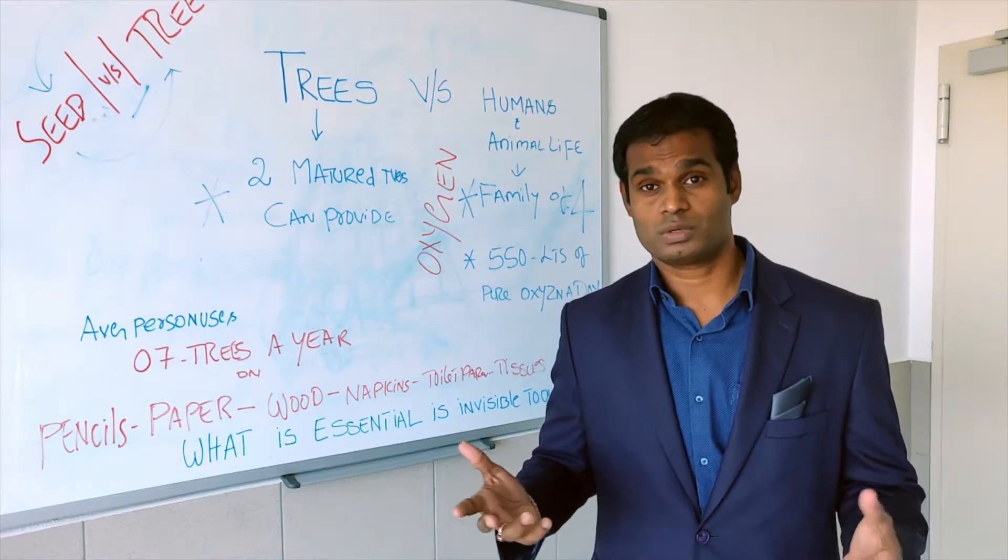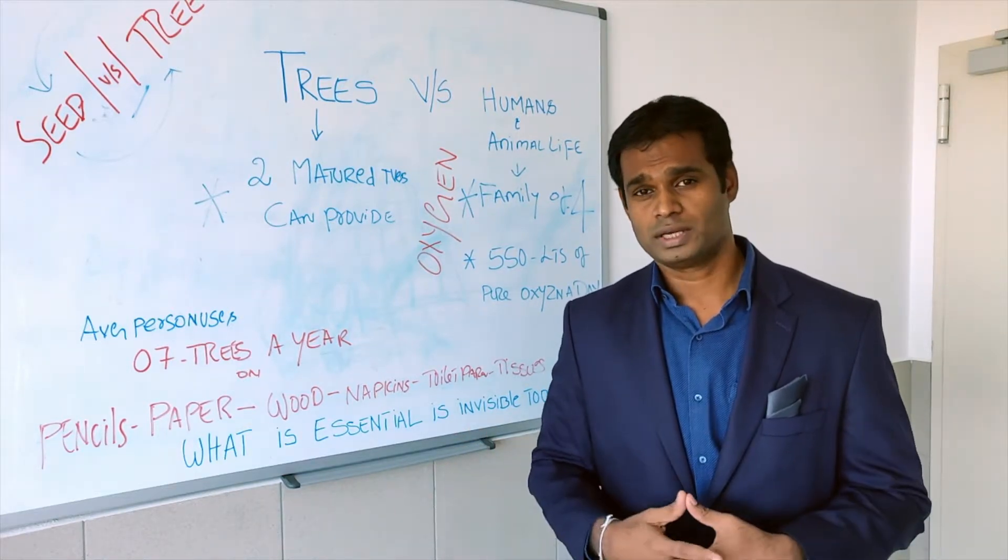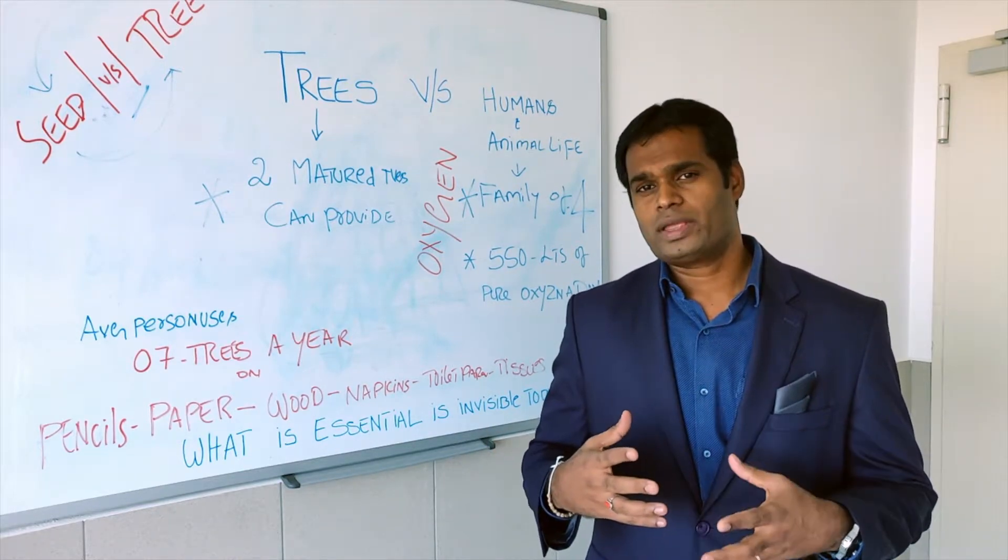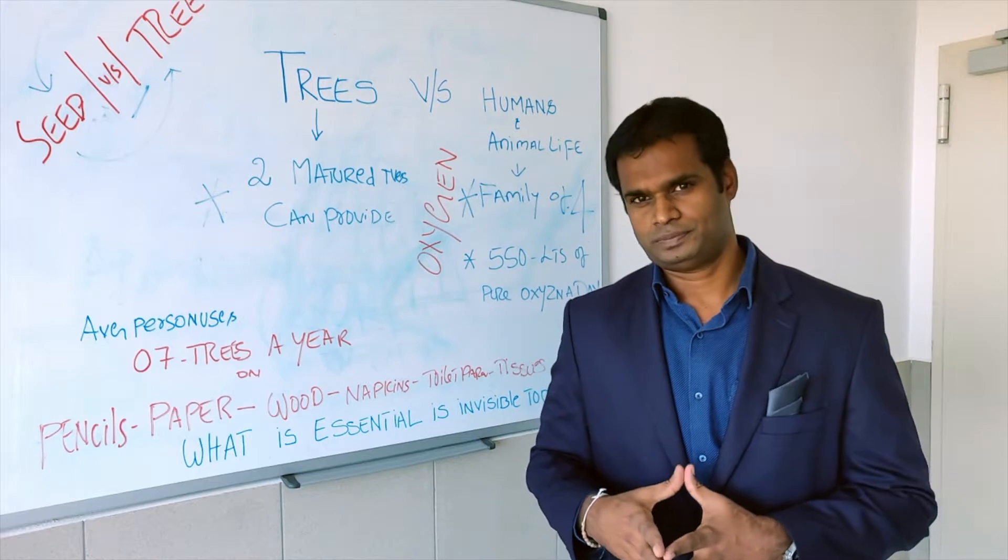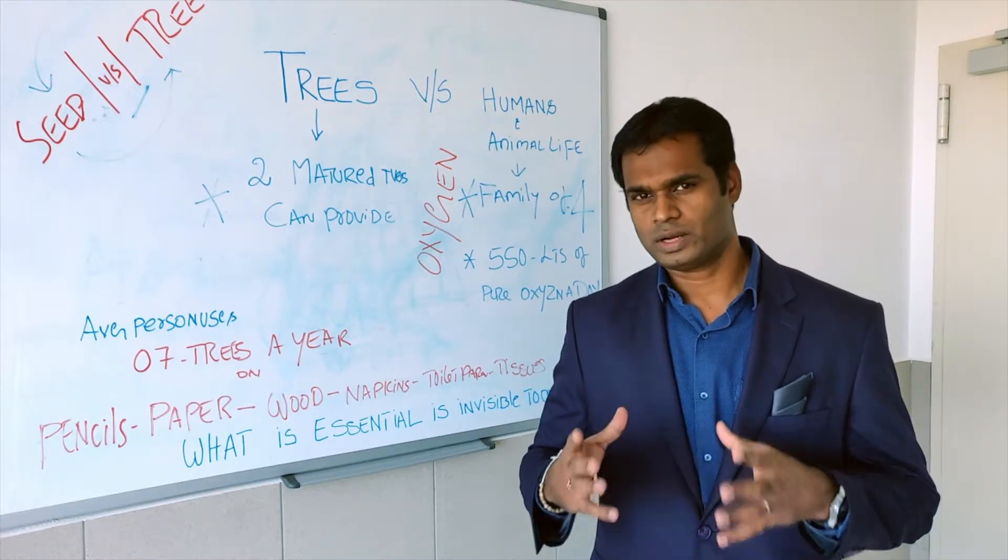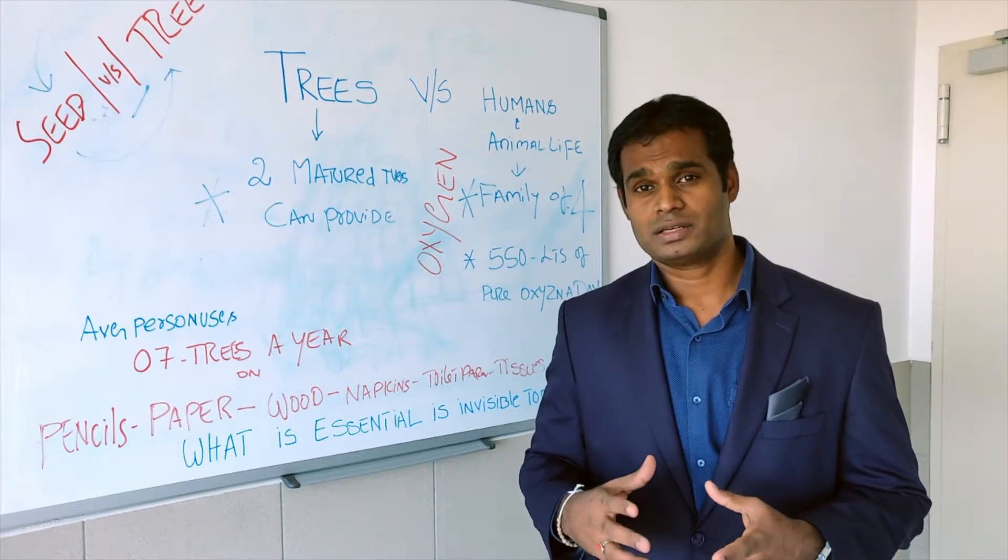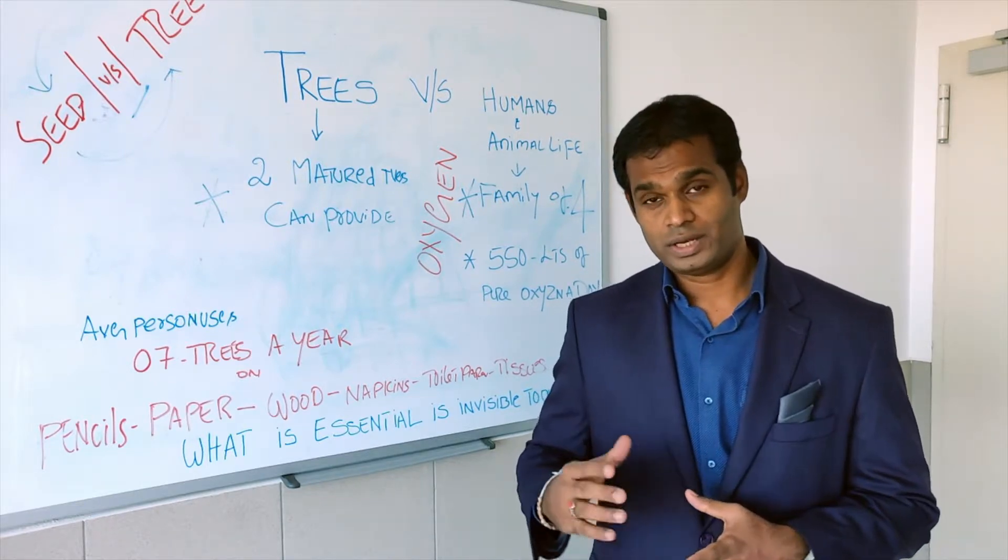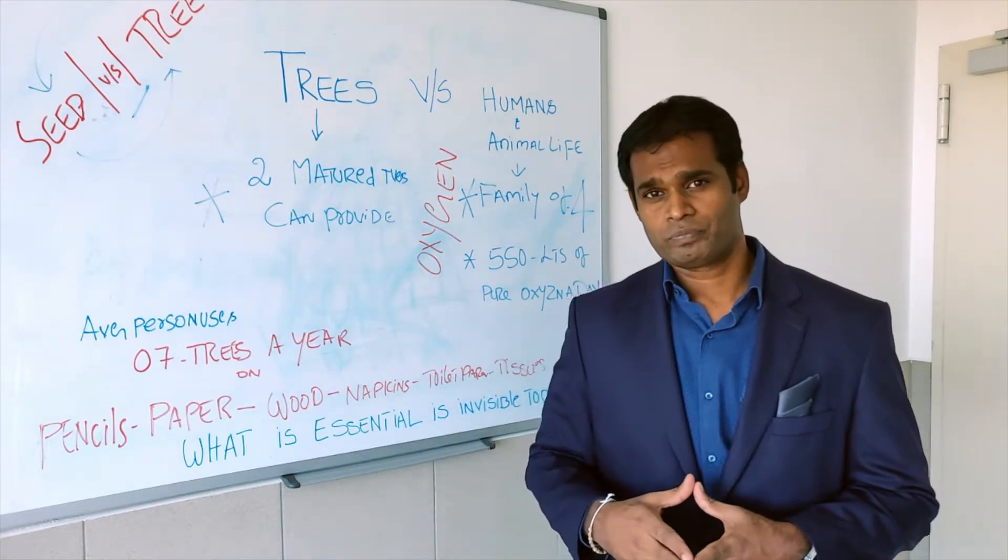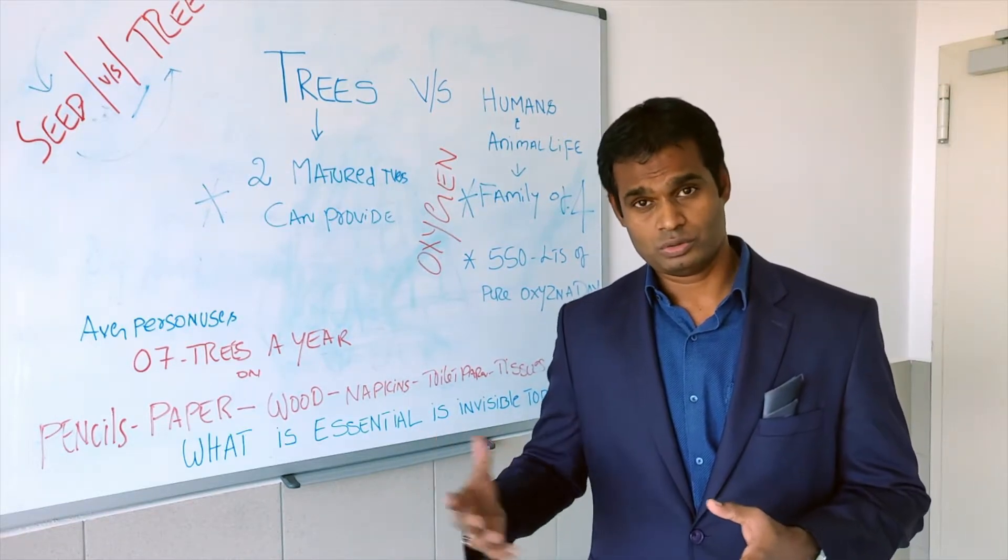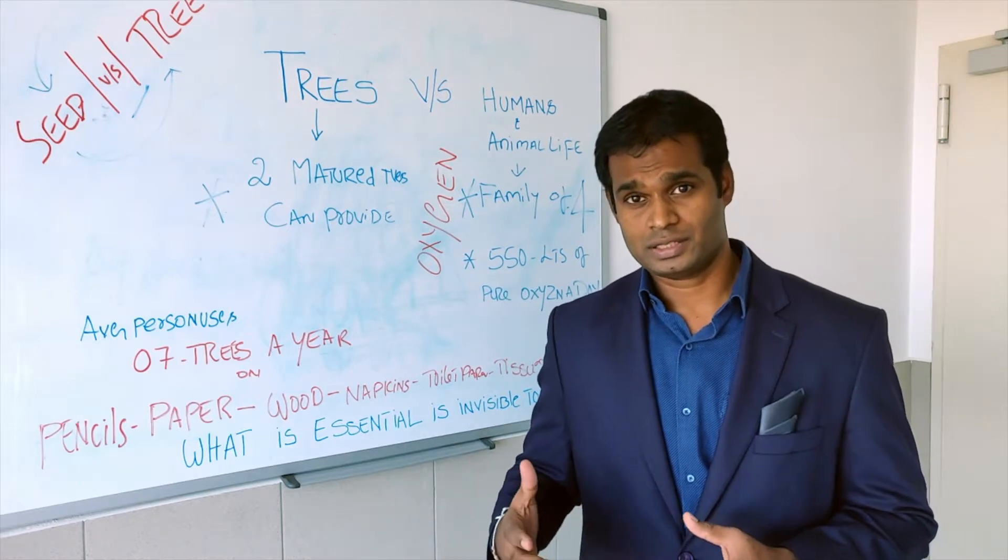The recent incident with Amazon forests is another classic example. We cannot control nature. The rains are very essential. Nature is doing its part. Suppose even if you plant a tree, if there is no rain or no water to take care of it, it's going to wipe off eventually.